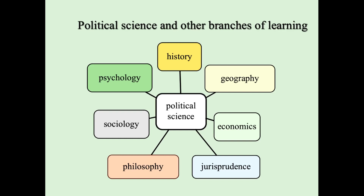This is political science and other branches of learning. Political science is not an isolated academic discipline — it is related to other branches of learning. They are history, geography, economics, jurisprudence, philosophy, sociology, and psychology.